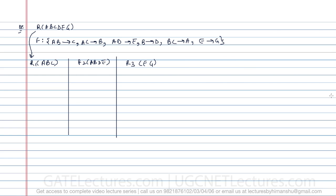First, let us check whether this decomposition is lossless or not. In R1 and R2, AB is a common attribute, and AB is a key attribute in R1. After combining R1 and R2 we get attributes A, B, C, D, E. Between this combined relation and R3, E is a common attribute. From the functional dependency E determines G, E is a key attribute in R3. So the decomposition is lossless.